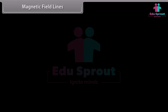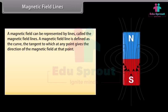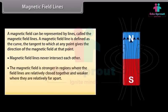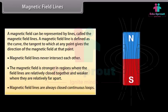Magnetic field lines: A magnetic field can be represented by lines. A magnetic field line is defined as the curve, the tangent to which at any point gives the direction of the magnetic field at that point. Magnetic field lines never intersect each other. The magnetic field is stronger in regions where the field lines are relatively closer together, and weaker where they are relatively far apart. Magnetic field lines are always closed continuous loops.